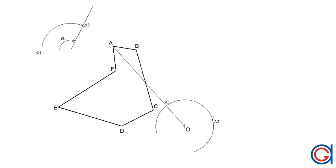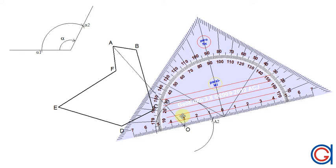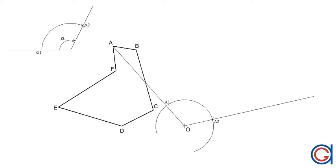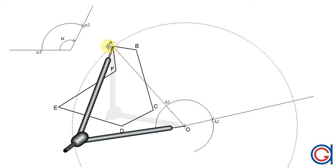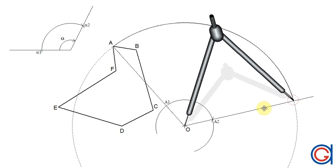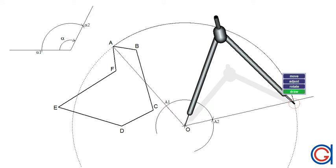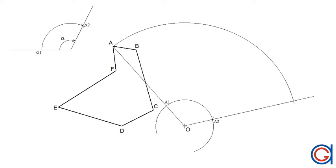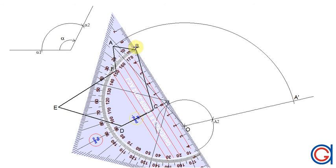The next step is to join the center point O to A2 and elongate the line as shown here. Then we set the compass on the center point O and with a radius OA, we scribe an arc to the right until it cuts the previously drawn elongated line at a new point which we will call A prime. A prime is the rotation point of point A.